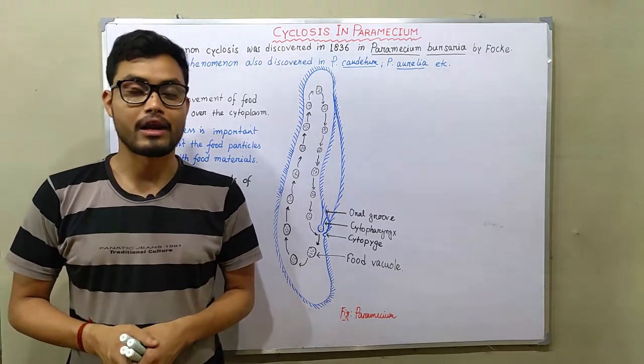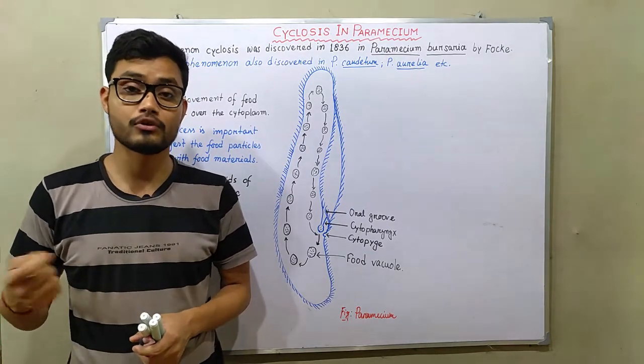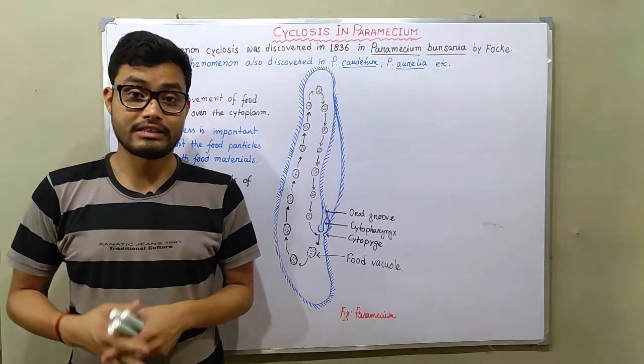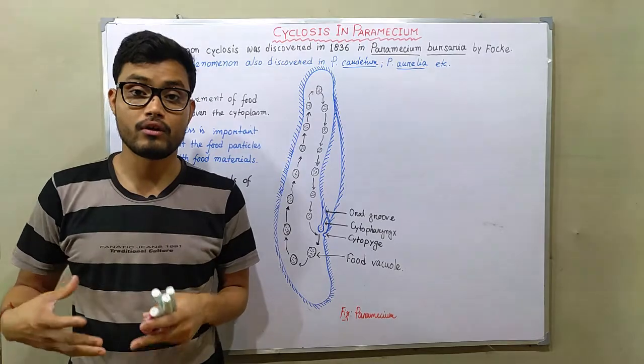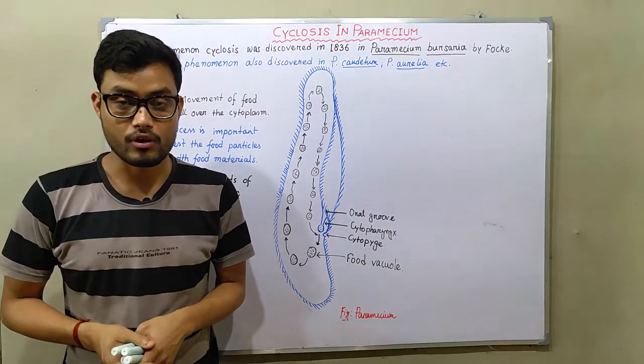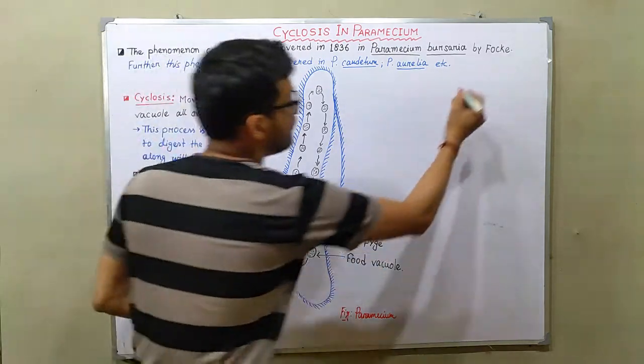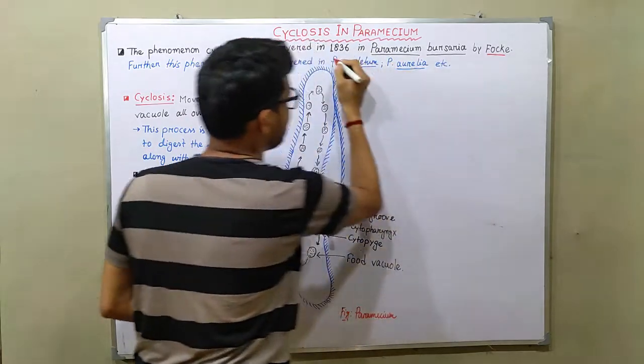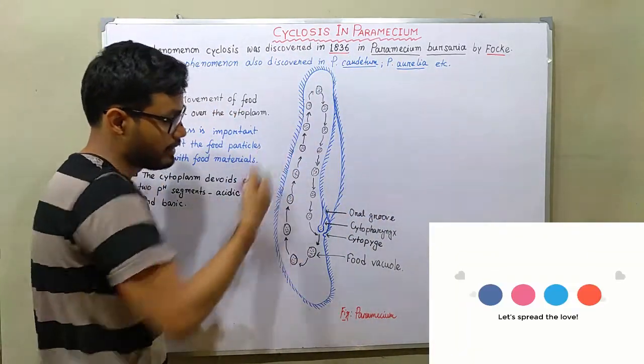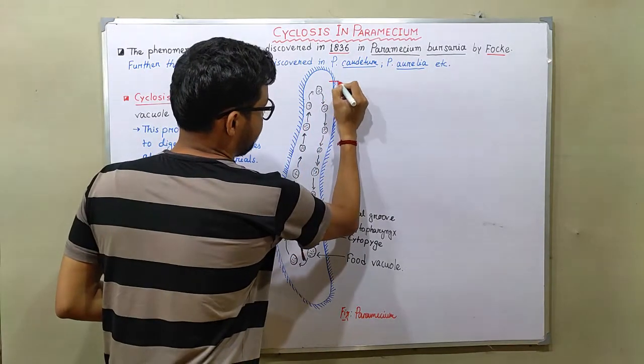How this food vacuole moves from one position to another position in the cytoplasm and why it is necessary to move the food vacuole along with the cytoplasm. So let's jump into the topic. Firstly in 1836, Fok discovered this phenomenon of cyclosis, that is the movement of food vacuole inside of the cytoplasm.